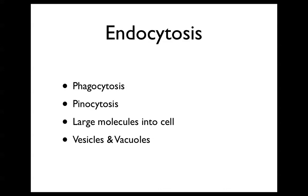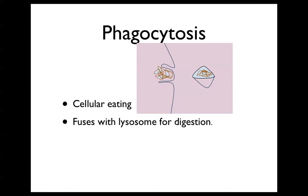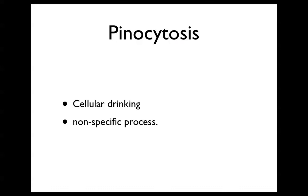Endocytosis includes phagocytosis and pinocytosis. What it does is move large molecules into a cell, and vesicles and vacuoles have a role in this process. First, phagocytosis, also known as cellular eating, fuses with lysosomes for digestion. Pinocytosis is cellular drinking, but it is a non-specific process.